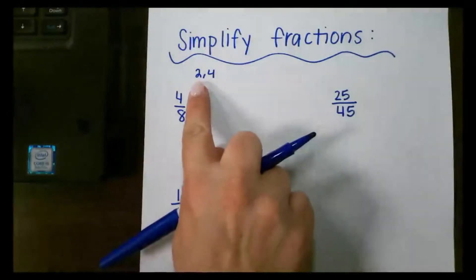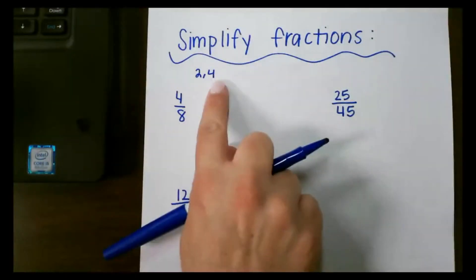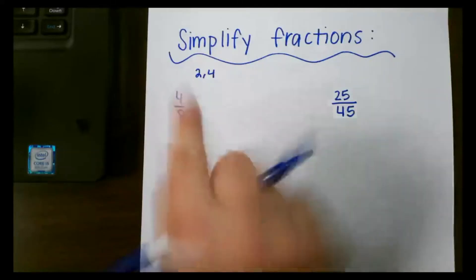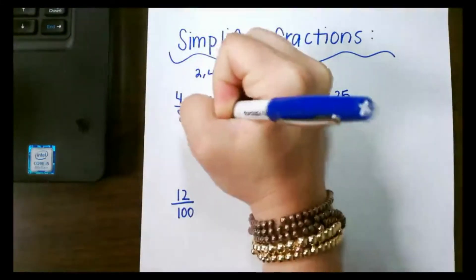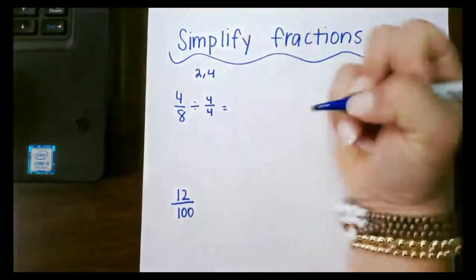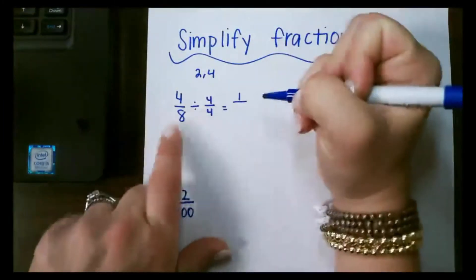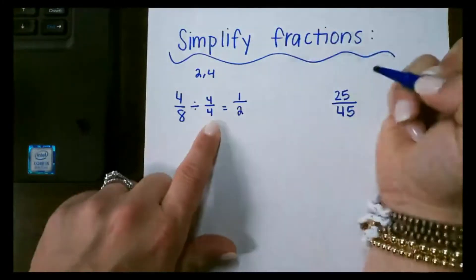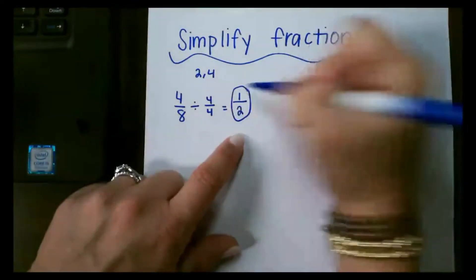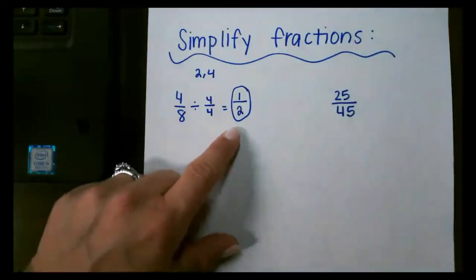If I use 2, I'm going to have to do it two different times. If I use 4, it's going to simplify straight to the answer. So I'm going to divide both numbers by 4. 4 divided by 4 is 1, and 8 divided by 4 is 2. That is as far as we can simplify because there's nothing that will divide into both 1 and 2.